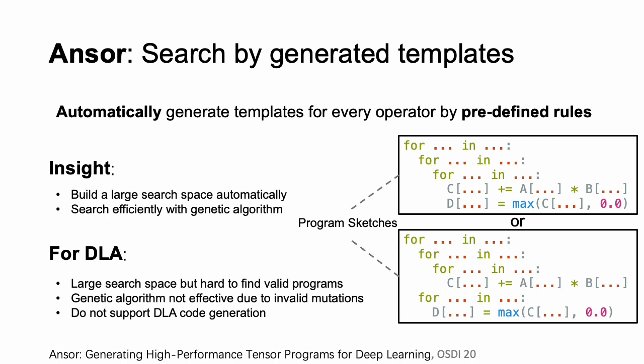For DLAs, the generated search space is large but hard to explore. It is hard to find valid programs in the search space, and the genetic algorithm is no longer effective since the mutation operator results in invalid programs. So Answer does not support high-performance code generation for DLAs.